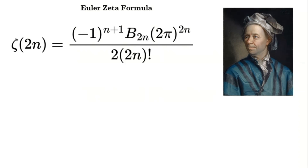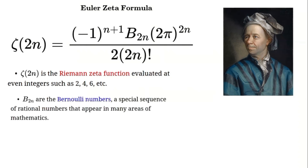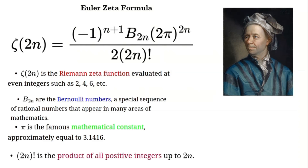Let's break it down. Zeta of 2n is the Riemann-Zeta function evaluated at even integers like 2, 4, 6 and so on. B sub 2n are the Bernoulli numbers, a special sequence of rational numbers that appear in many areas of mathematics. Pi is the famous mathematical constant, approximately equal to 3.1416. 2n factorial is the product of all positive integers up to 2n. For example, when n equals 1, the formula gives us zeta of 2 equals pi squared divided by 6. This is a well-known result in mathematics.